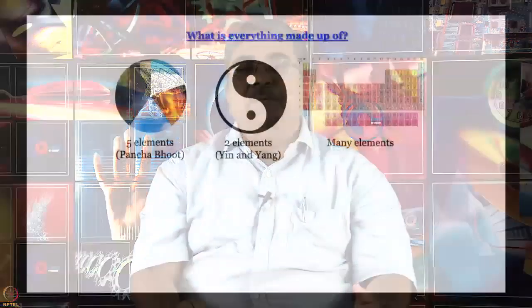There are many elements, and we all know they can be arranged in a periodic table from which one can even predict properties of elements. There was a point of time when properties of even undiscovered elements were predicted using this periodic table. But that is one side of the story.